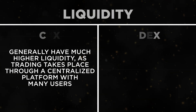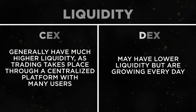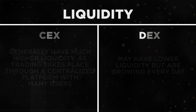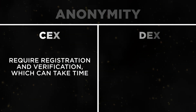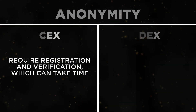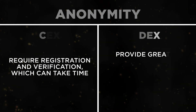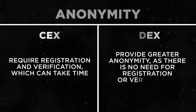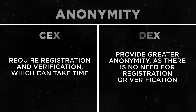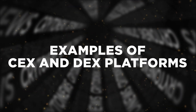Liquidity: CEXs generally have much higher liquidity as trading takes place through a centralized platform with many users. DEX may have lower liquidity but are growing every day. Anonymity: CEXs require registration and verification, which can take time. DEX platforms provide greater anonymity as there is no need for registration or verification.